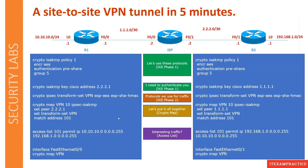The last step is to create a crypto map — let's put it all together. We specify our peer IP address, our IKE Phase 2 policy called the transform set, and we match our access list. Finally, we have to apply this crypto map. Just like an access list, creating it is not enough — you have to apply it. In my case it is applied to F0/0 on R1 and F0/1 on R2.